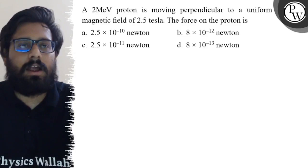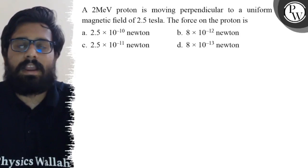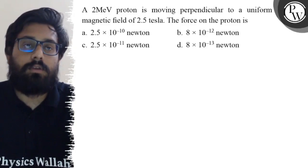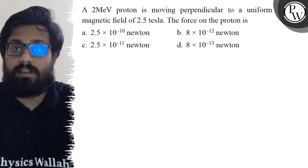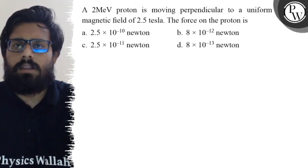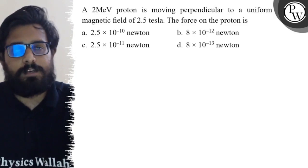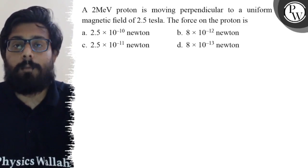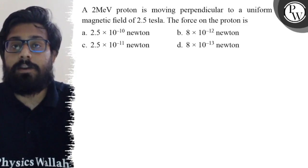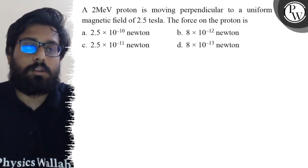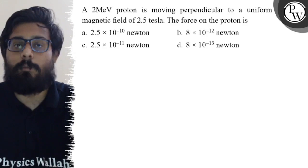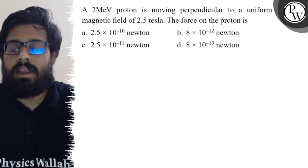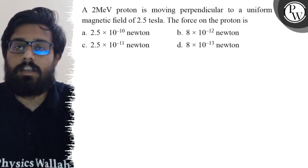Hello. So let us see the question. A 2 mega electron volt proton is moving perpendicular to a uniform magnetic field of 2.5 tesla. The force on the proton is: option one is 2.5 into 10 to the power minus 10 newton, option two is 8 into 10 to the power minus 12 newton, option three is 2.5 into 10 to the power minus 11 newton, and option four is 8 into 10 to the power minus 13 newton.